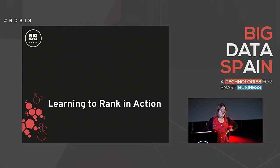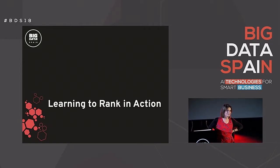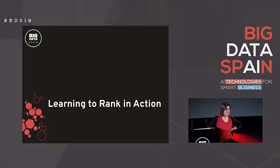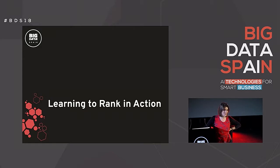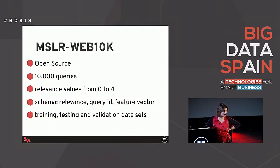So that's the end of the algorithms. We've seen pointwise, which was linear regression; pairwise, which was RankNet and LambdaRank; and listwise, which is LambdaMart. Hopefully you have some insight into how they work. But what we really need is to be able to use them - it's machine learning, so we can't just pen and paper it. In order to do that, I'm going to need a dataset.